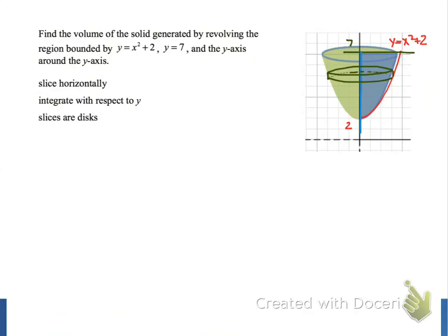We're going to approximate each slice with a circular disk, and we start slicing up our object at the bottom, where y is equal to 2, and slice it up until the top of the object, where y is equal to 7. So those will be our limits of integration at y equals 2 and y equals 7.